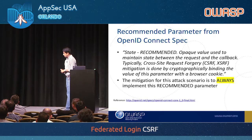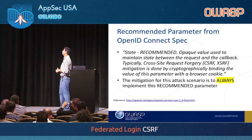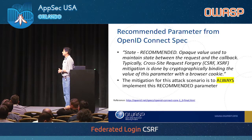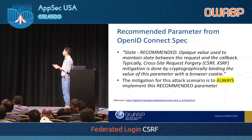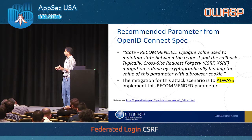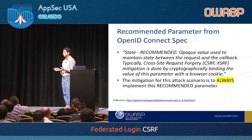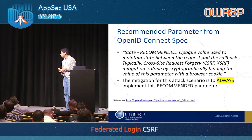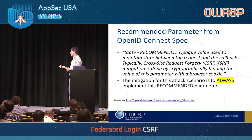As with the OAuth spec, the OpenID Connect spec also mentions a state parameter, which is explicitly called out as a protection against CSRF or XSRF to mitigate these issues. But again, because it is a recommended parameter and not a required parameter, I've seen implementations where this is not used correctly. So you should always check for the state parameter — that's the key takeaway.